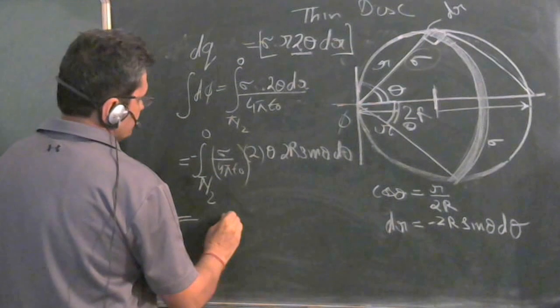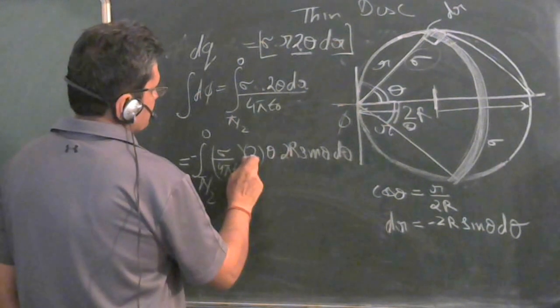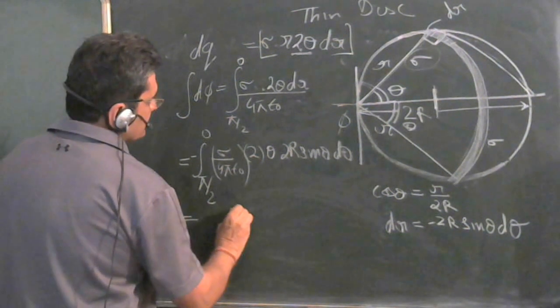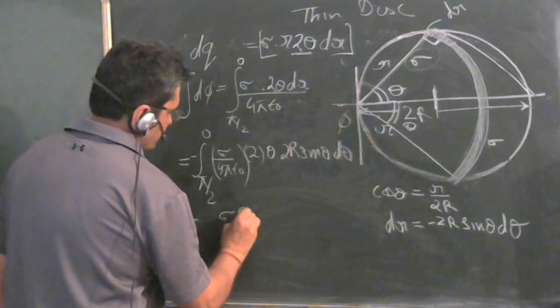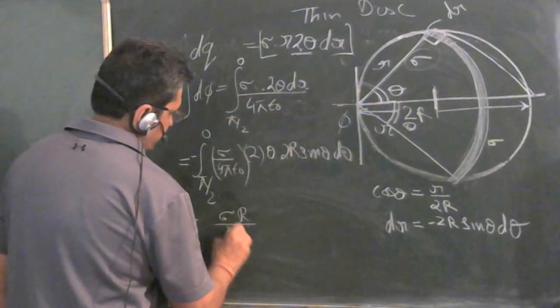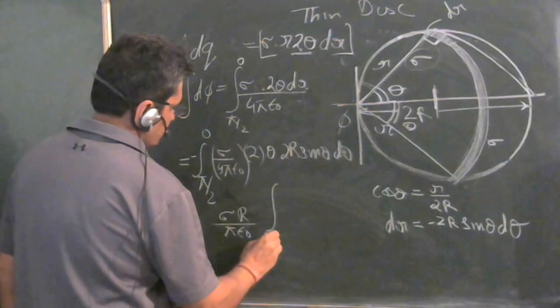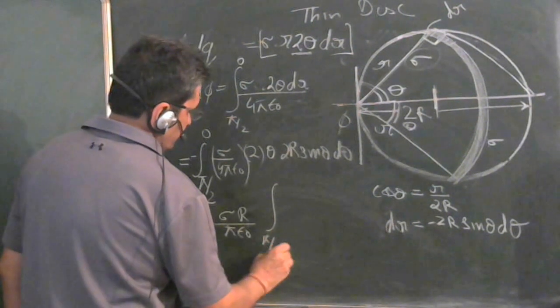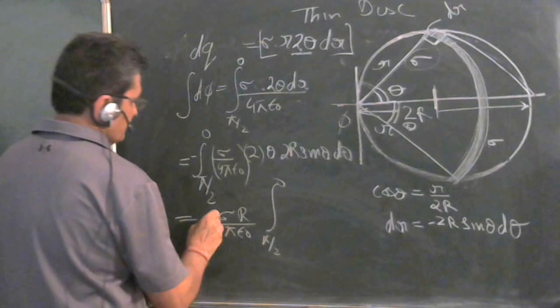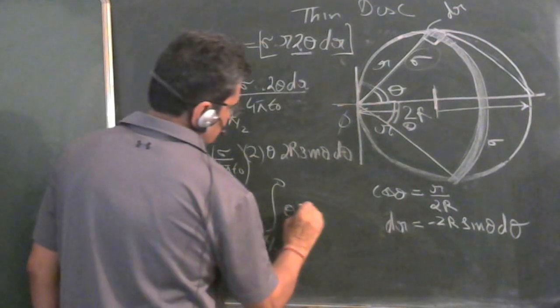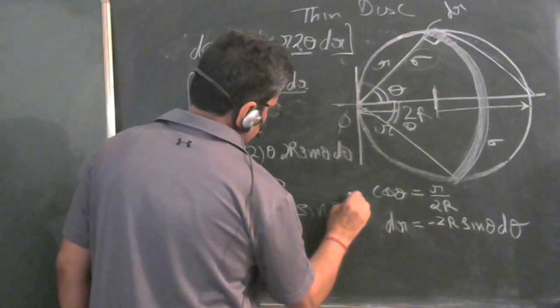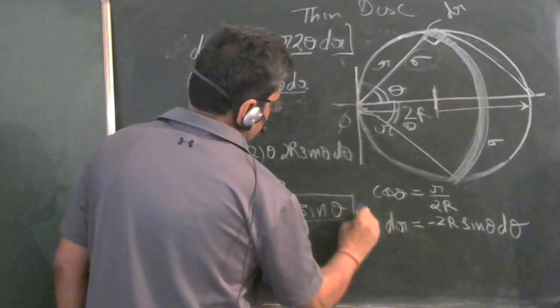Now take the constants out. So it is twice, twice and 4 will get cancelled. It will be sigma r upon pi epsilon_0. Integral pi by 2 to 0. Minus sine was here. Theta sine theta d theta.